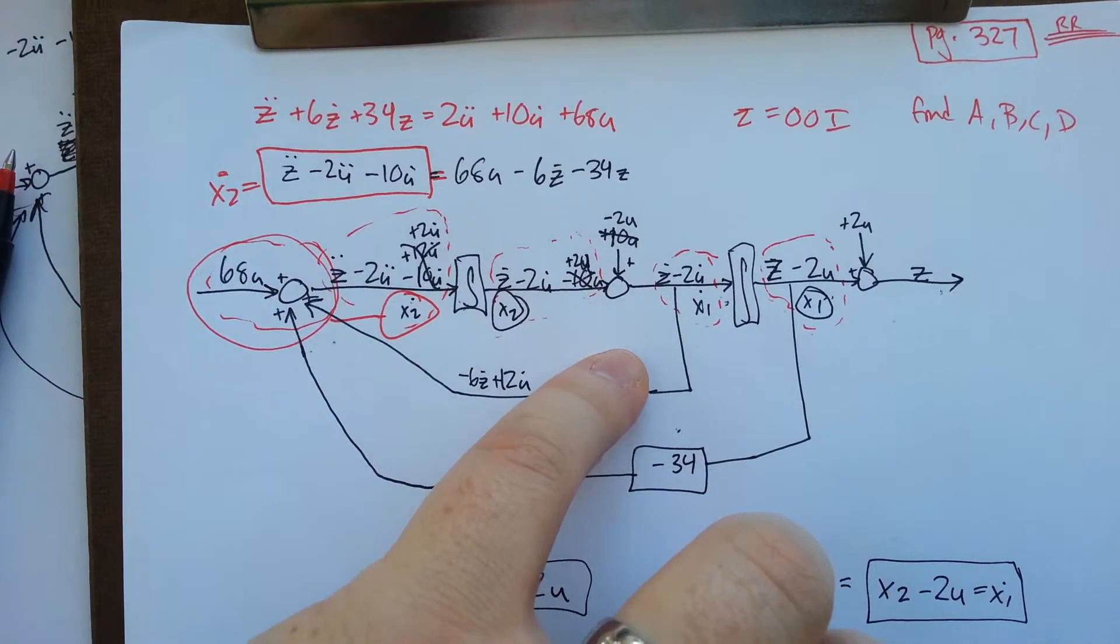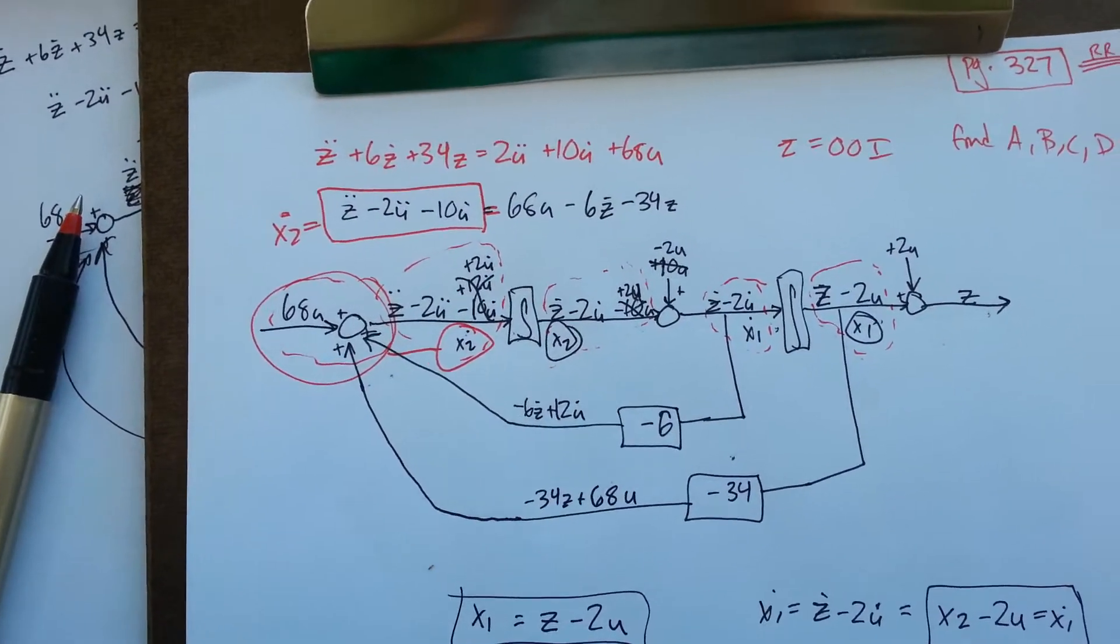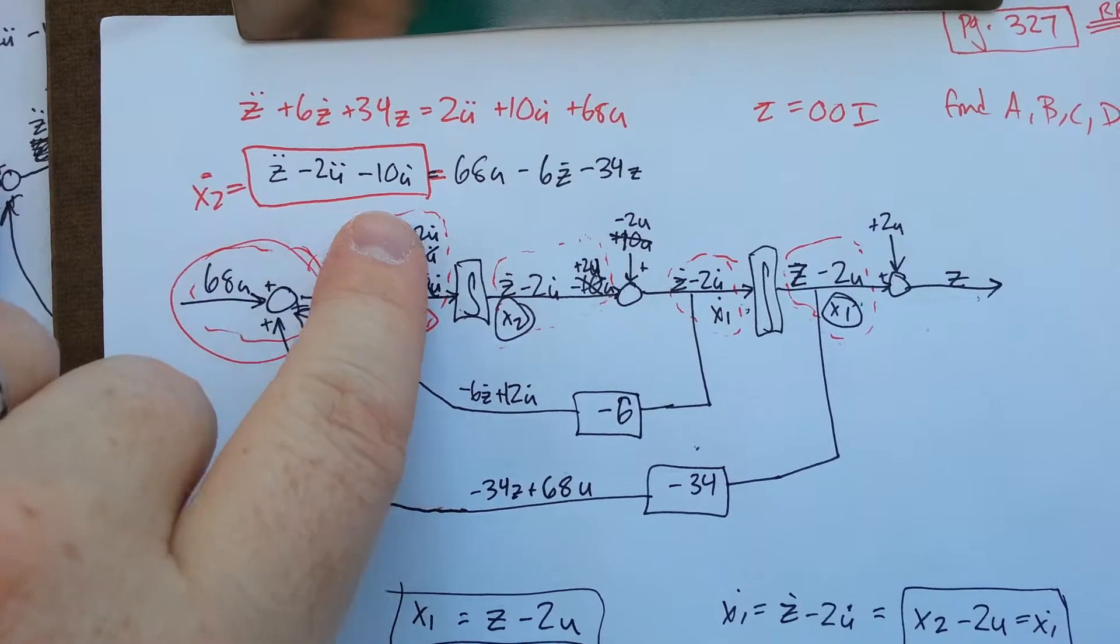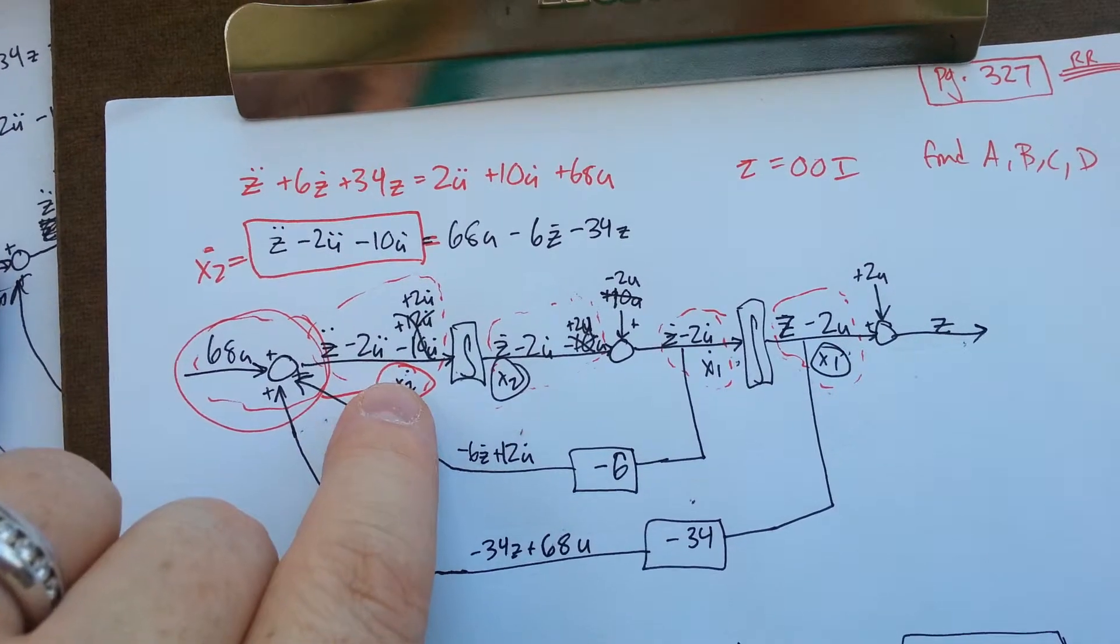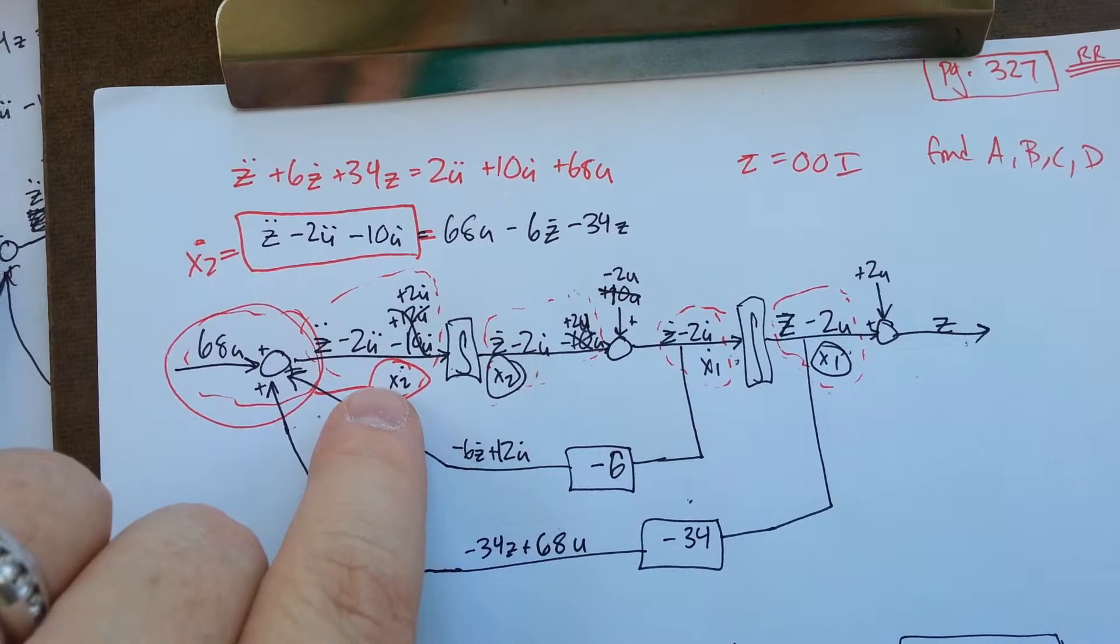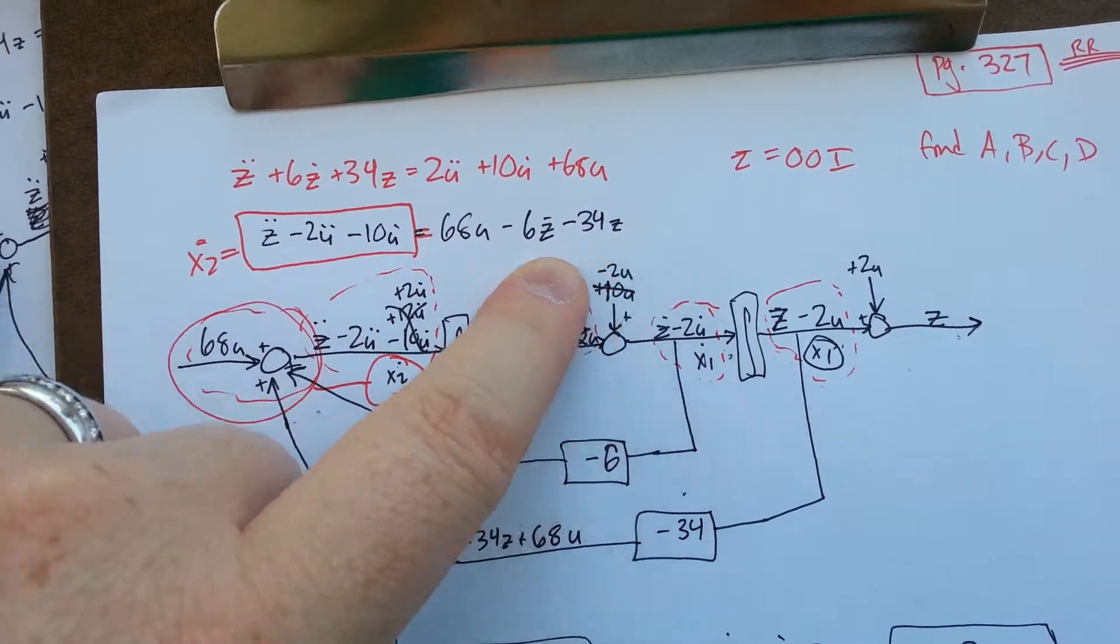And the way that plus 2u got in there is you need to make your x2 dot—you can't have it in terms of your input derivative. So you need your x2 dot to equal that, which is in terms of everything else.